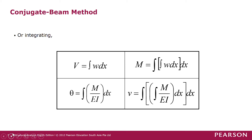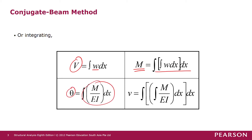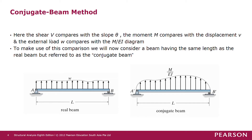When we integrate these equations, shear equals the integration of external load dx, and double integration gives M equals double integration of w dx. Integrating again, θ becomes the integration of M over EI dx, and displacement becomes double integration of M over EI. So shear force V compares with slope θ, moment M compares with displacement v, and external load w compares with the M over EI diagram.